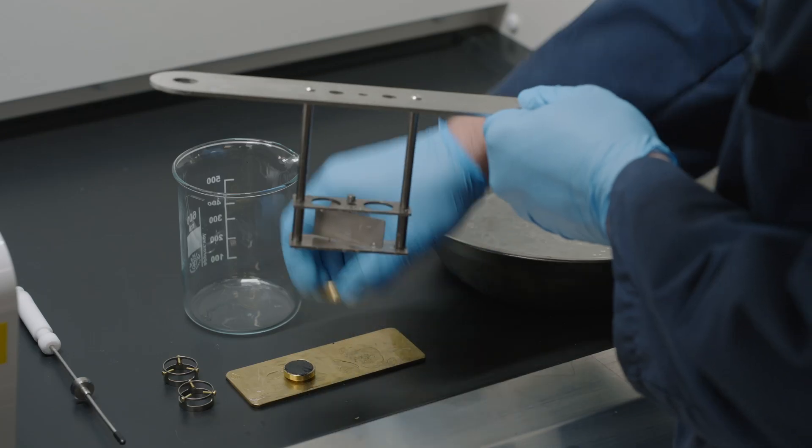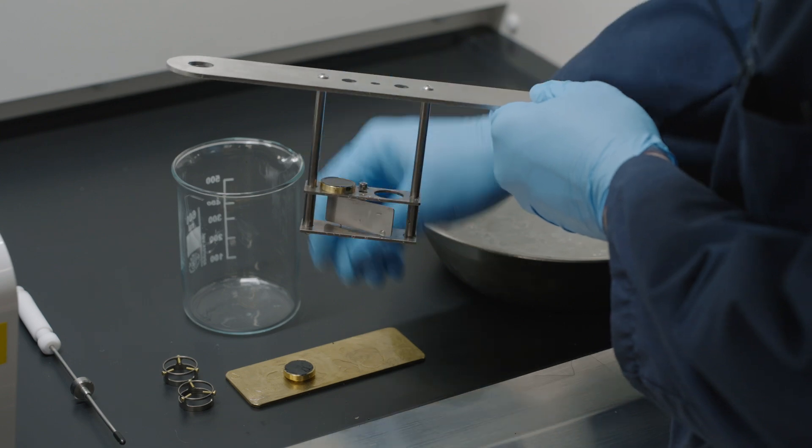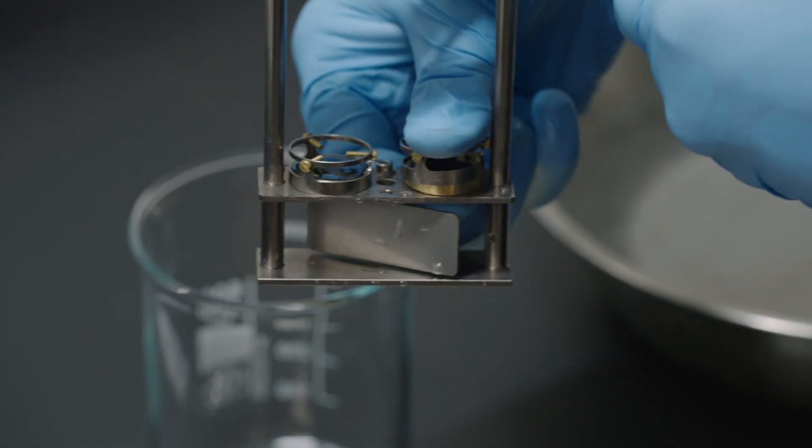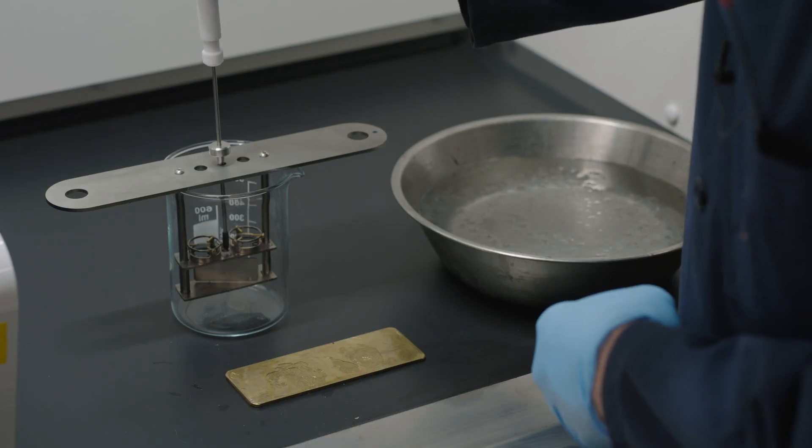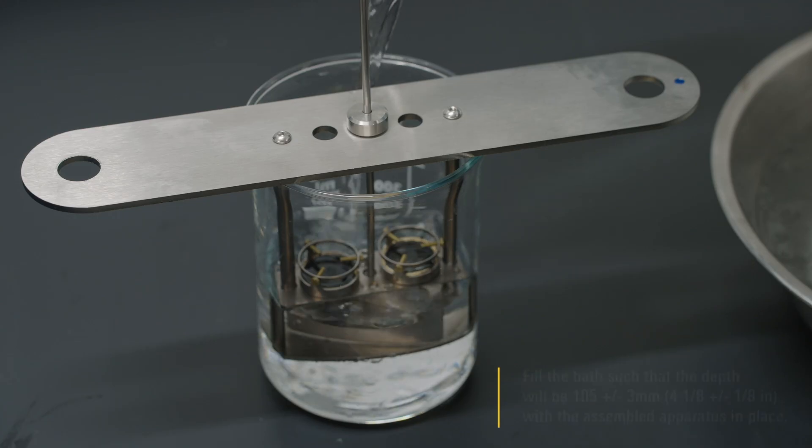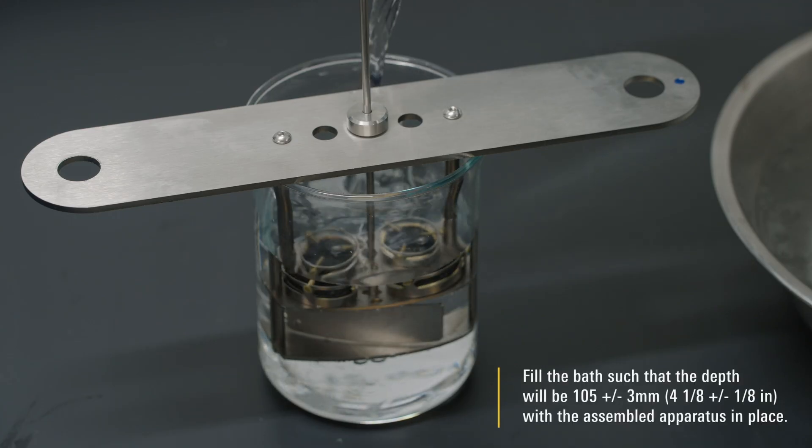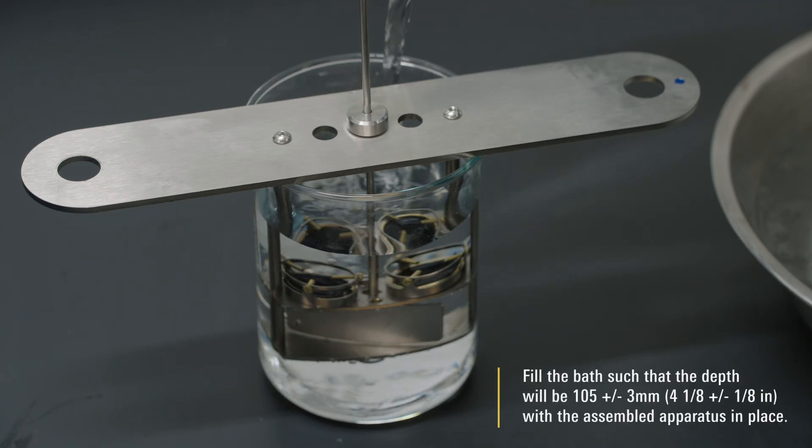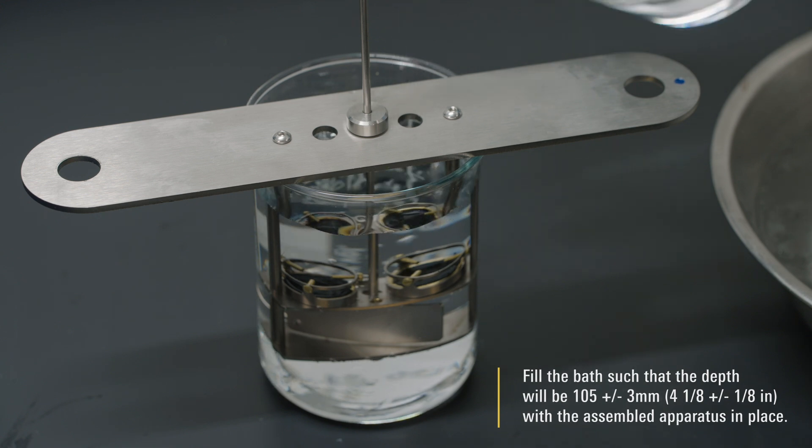Move the apparatus to the laboratory hood and assemble the specimen rings, ball centering guides, and thermometer. Fill the bath such that the depth will be 105 plus or minus 3 millimeters with the assembled apparatus in place.